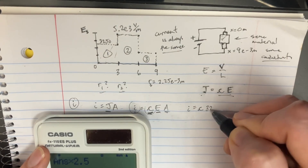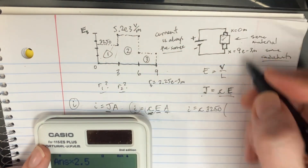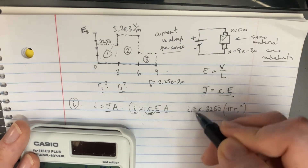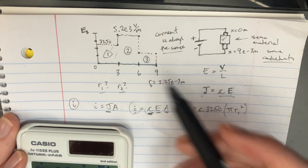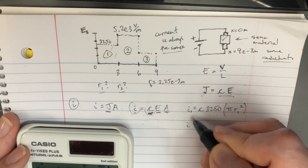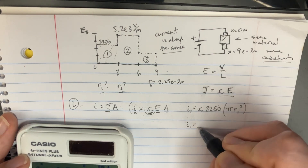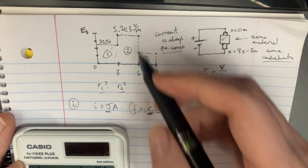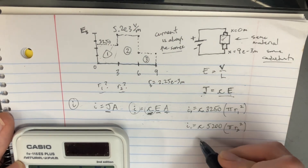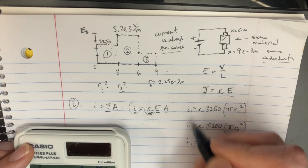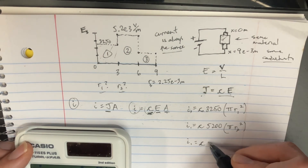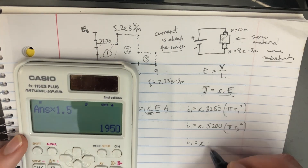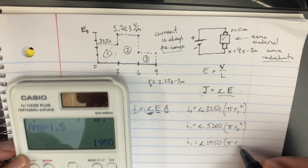So the electric field for zone 1 is 3250, and the area is πr₁². For zone 2, the current and conductivity are the same, and the electric field is 5200 — the maximum on the graph — with area πr₂². For zone 3, the electric field scales to 5200 divided by 4 times 1.5, giving 1950, with area πr₃².